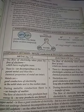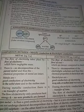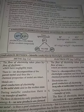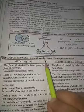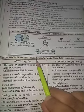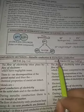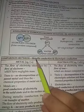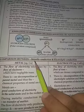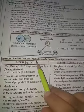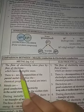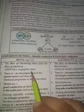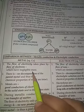Today we will start with the comparison between metallic conduction and electrolytic conduction. Conduction of electricity through metals takes place in the solid state by the flow of electrons, which have negligible mass.